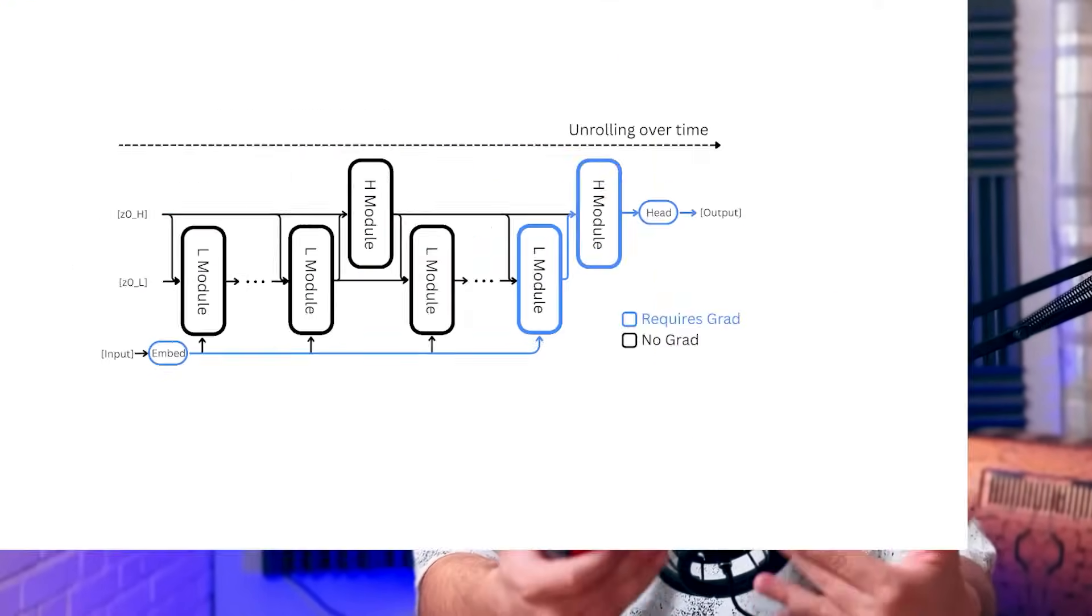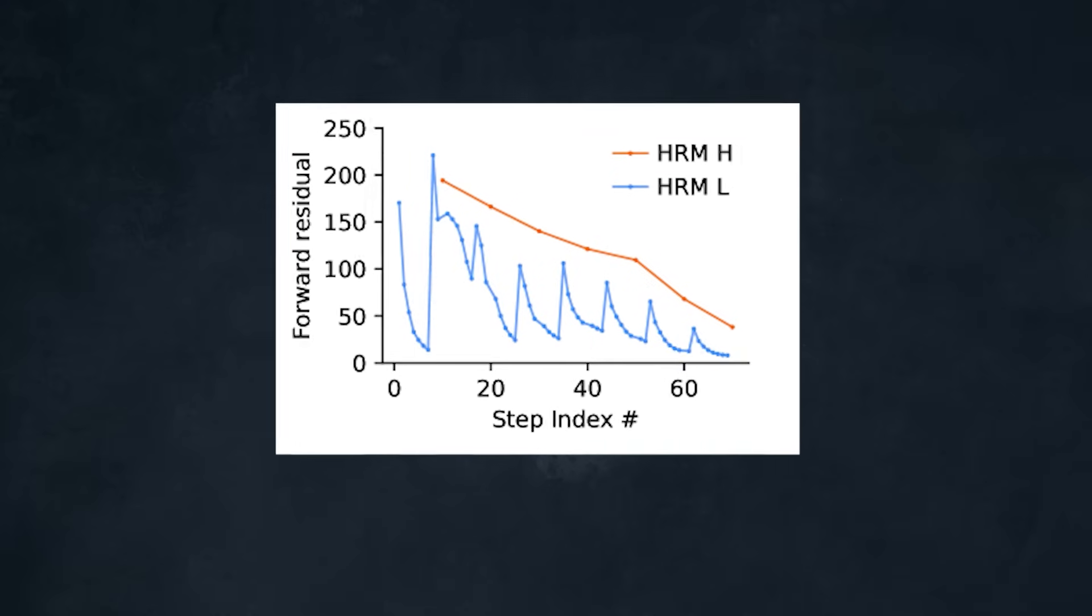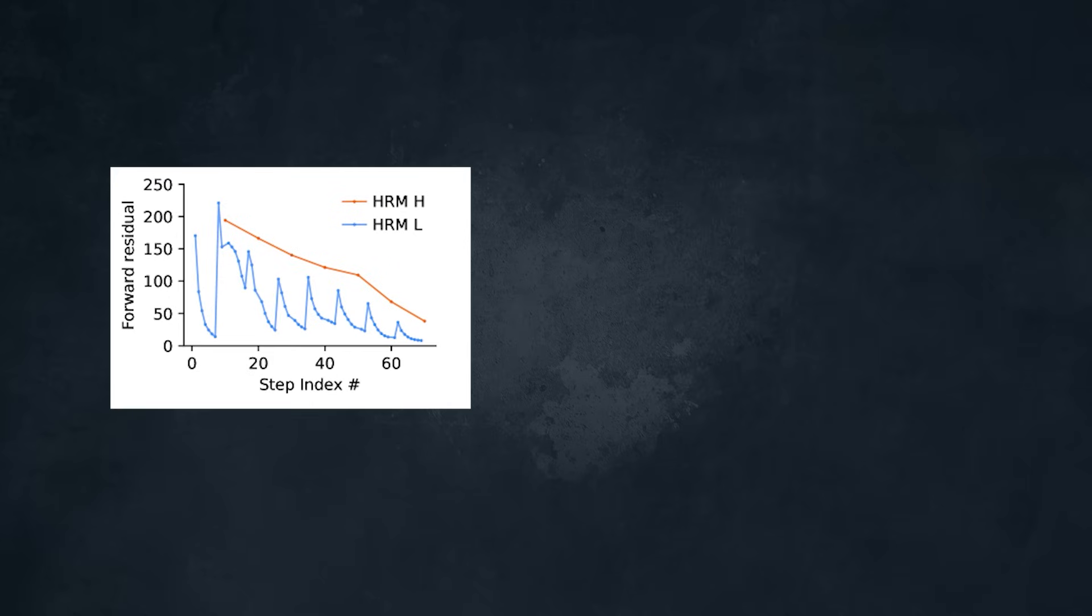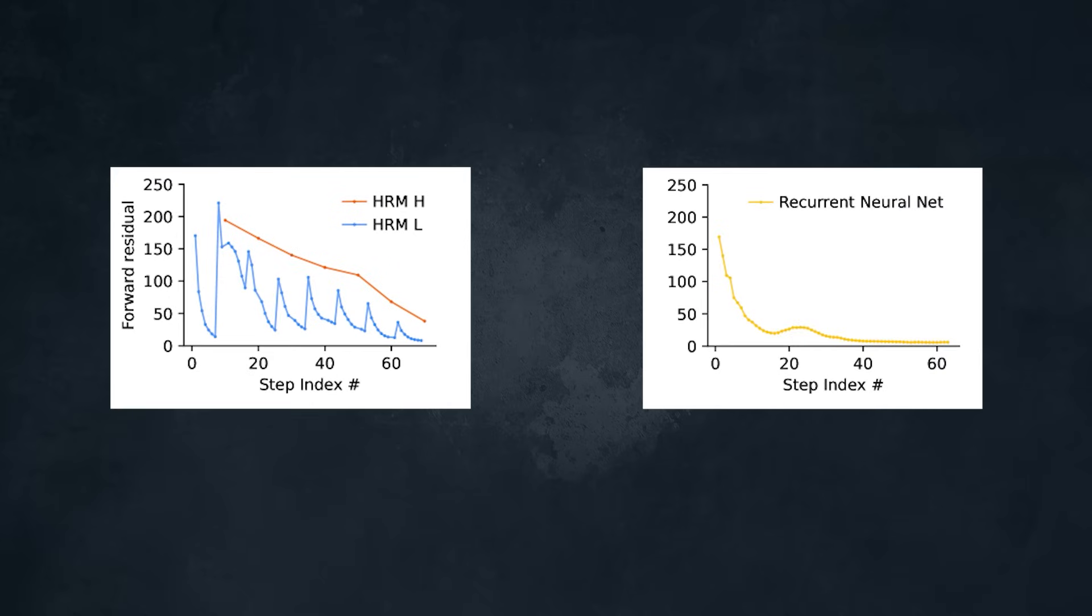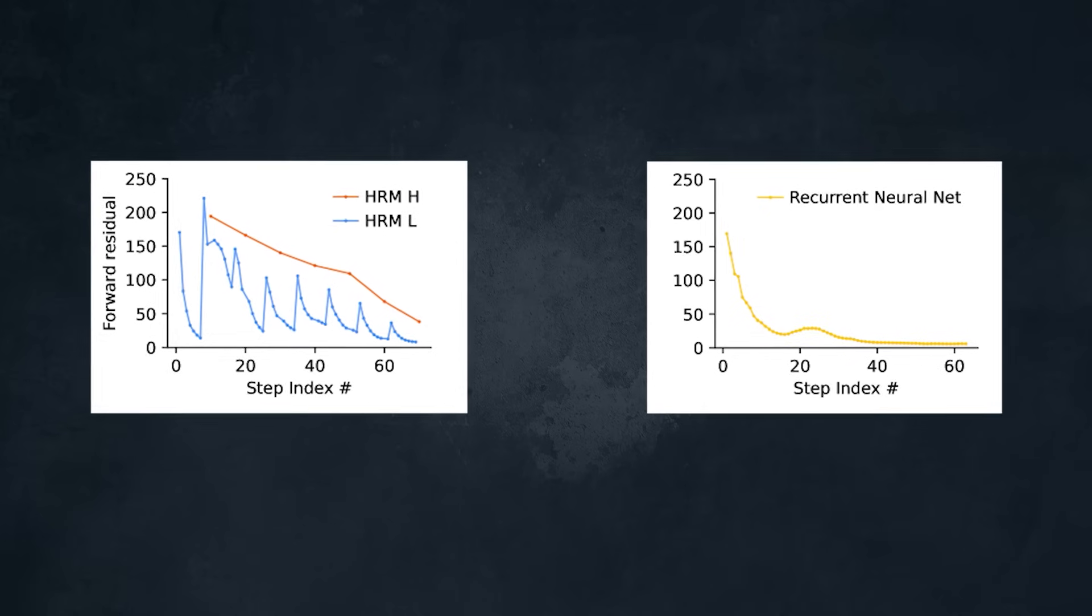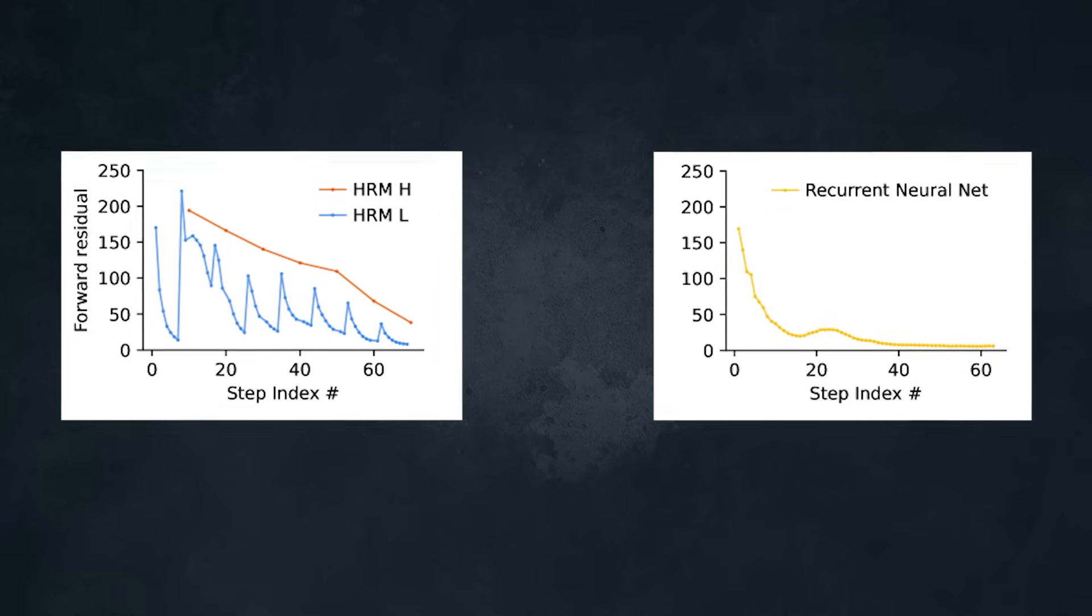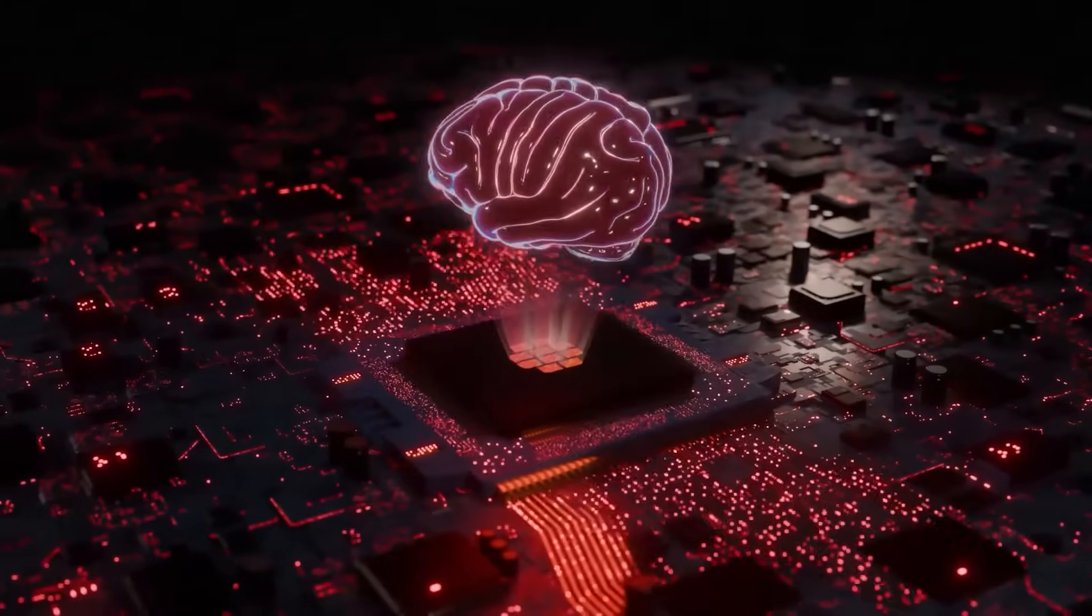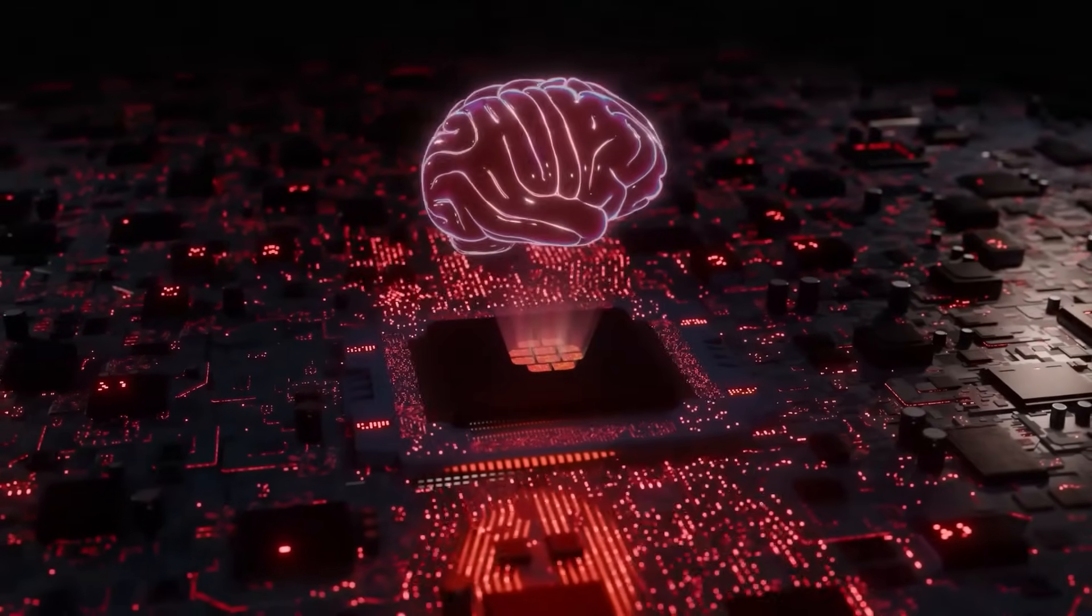But HRM breaks this stalemate by taking the best of both worlds. It embraces the loop like an RNN. It is fundamentally a recurrent iterative machine built for multi-step problem solving. It avoids the early convergence by using hierarchical convergence, where the CEO resets the worker's tasks at the end of each sprint. It acts as a constant jolt to the system. Just when the worker, the L module, might be about to settle in for a stable, inert state, the CEO, the H module, updates its strategy and gives a fresh new problem to solve. This prevents the computational activity from ever fading away, allowing it to sustain deep thought for hundreds of steps. HRM finally delivers on the original promise of recurrent neural networks. A model that not only can think in steps, but can also sustain that thought step after deliberate step, until the problem is truly solved.